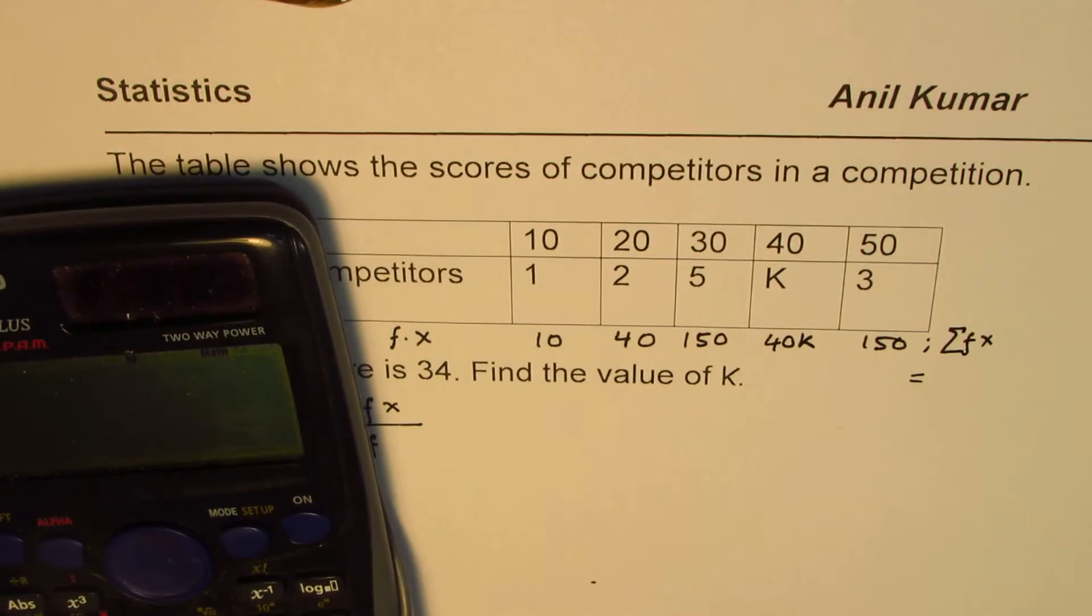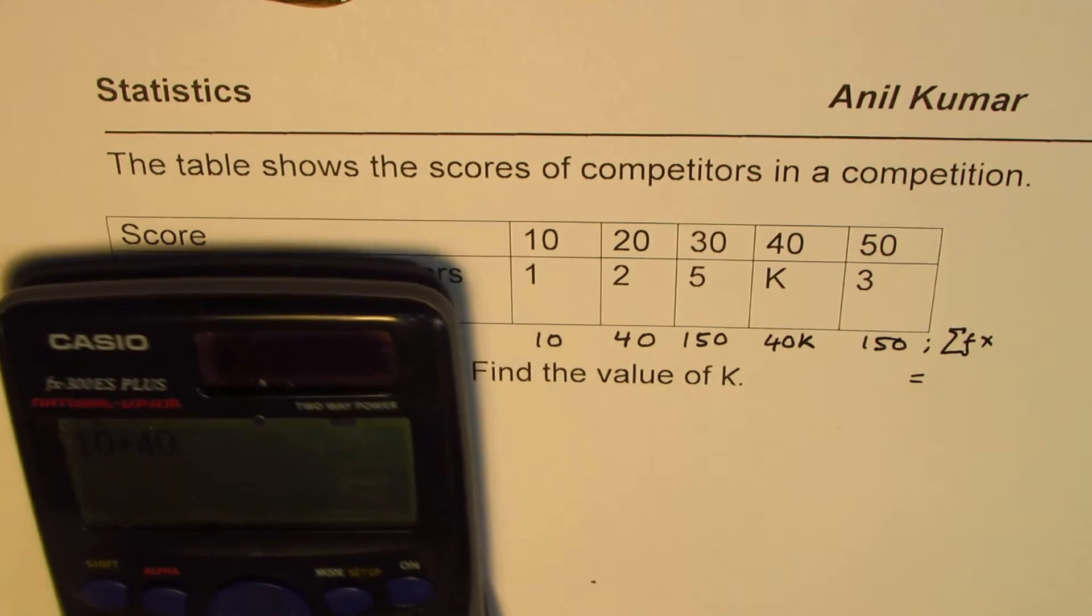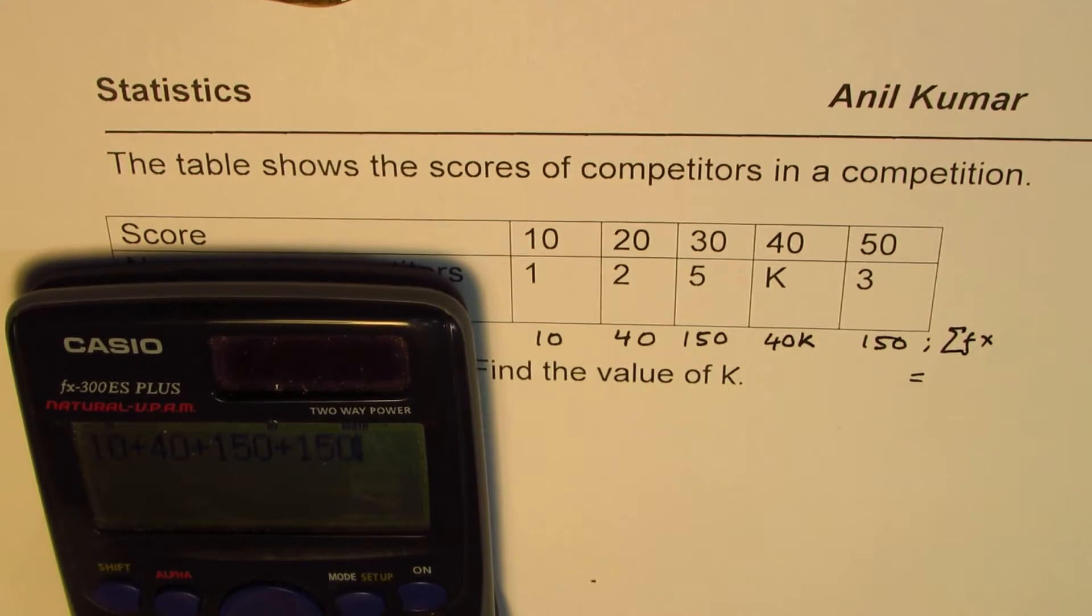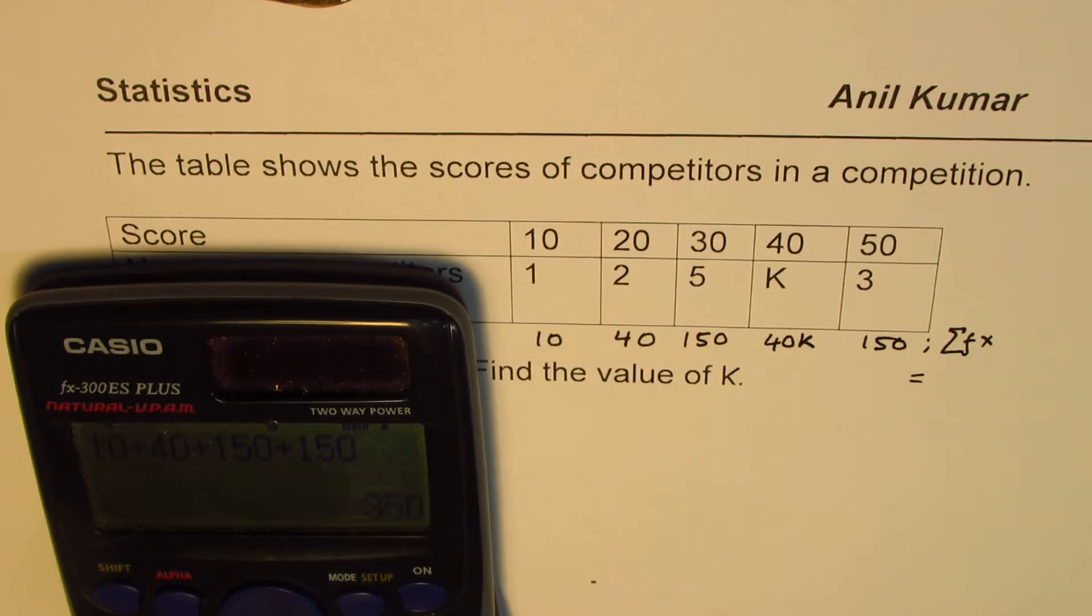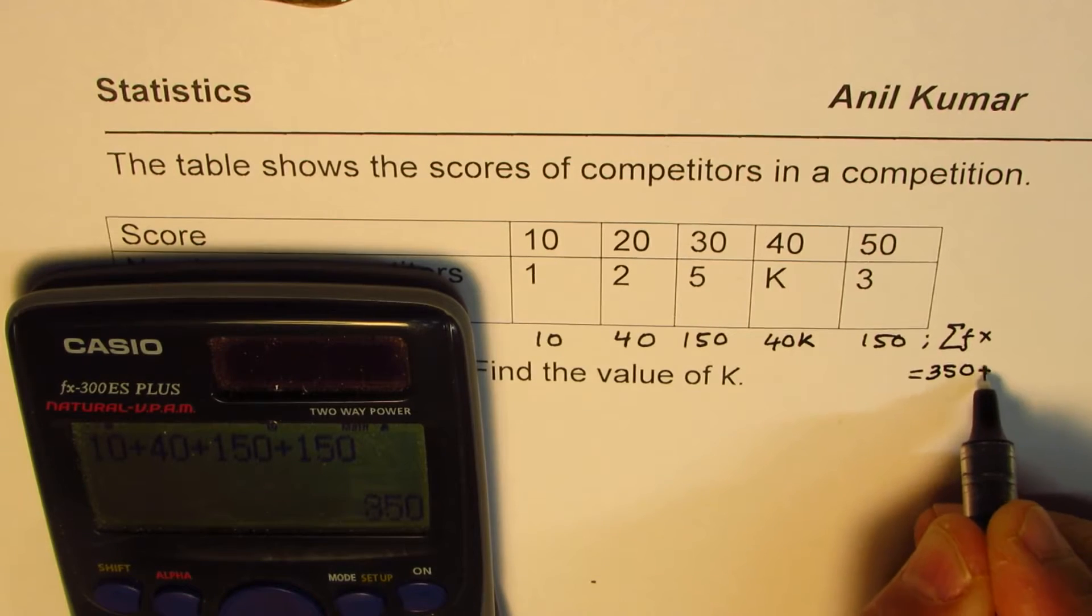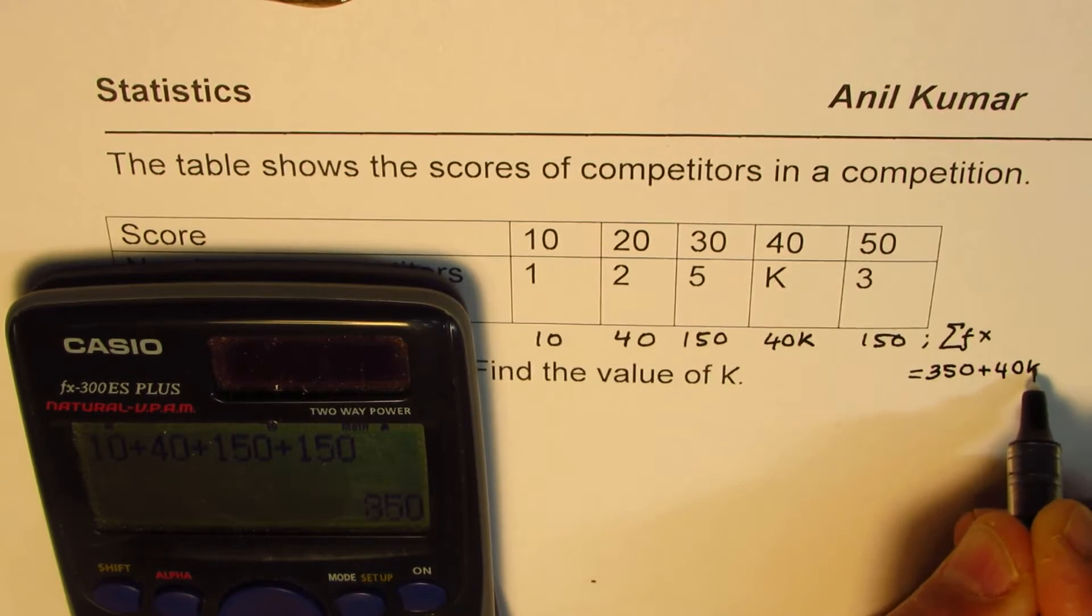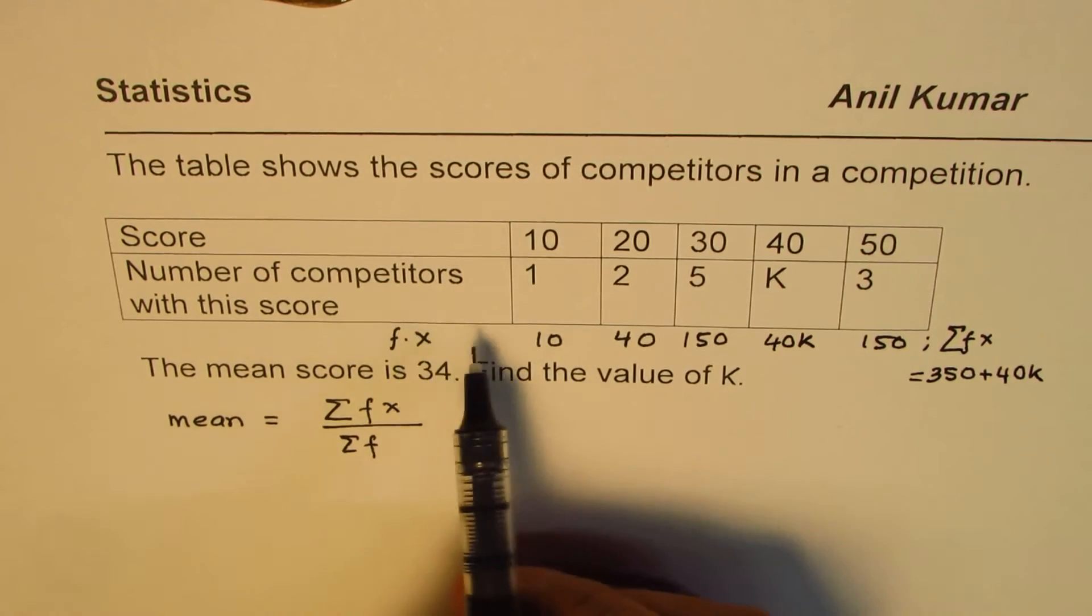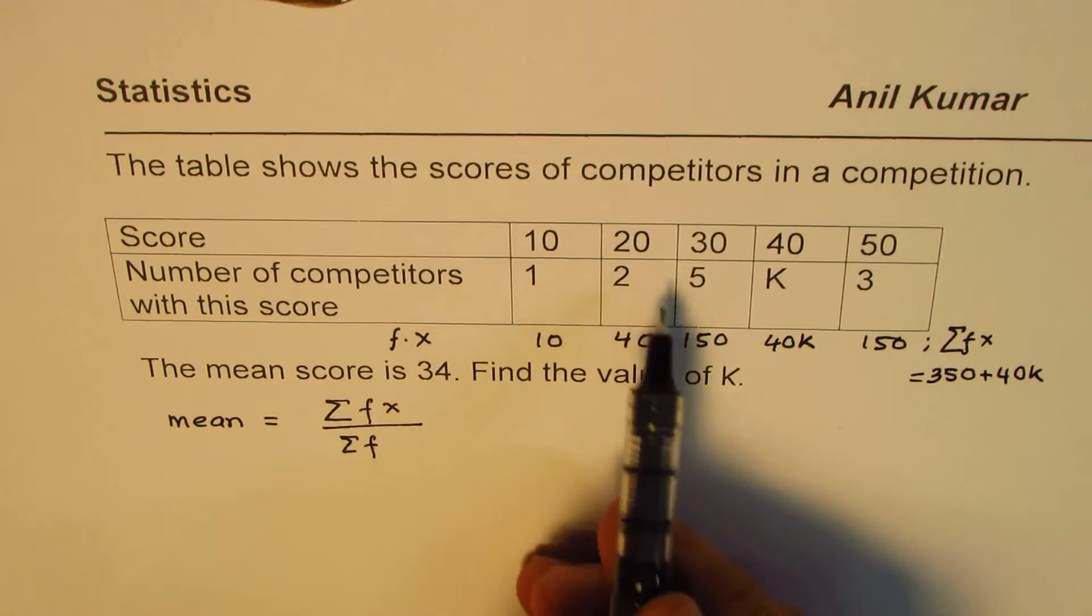So which is 10 plus 40 plus 150 plus 150 which is equal to 350 so we get 350 plus 40K. So that is the sum which we get of frequency times the scores.